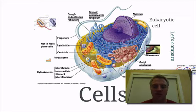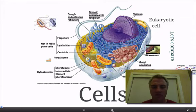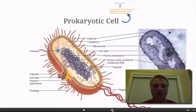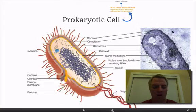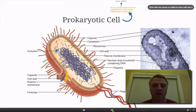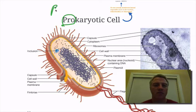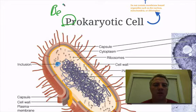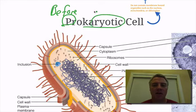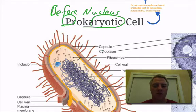One of the first major divisions in cells is there are two main types of cells that we're going to learn about. The first one is what we call a prokaryotic cell. Now if we break that word down, there are two parts to this word: the 'pro,' which actually means 'before,' and the last part, 'karyotic,' means 'nucleus.' So it kind of means 'before nucleus.'